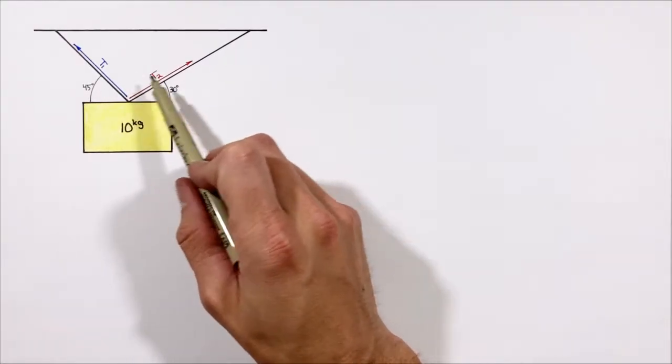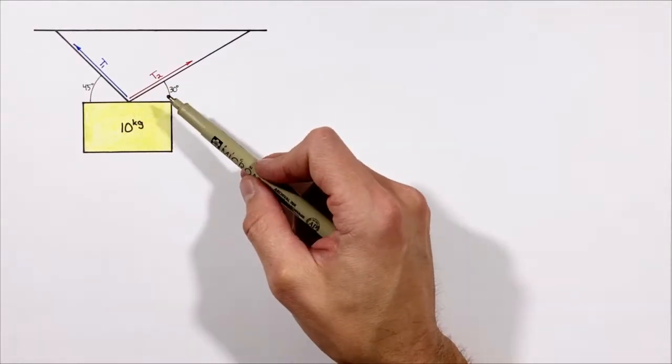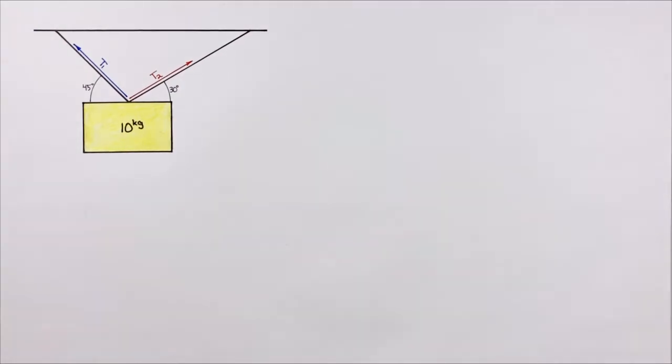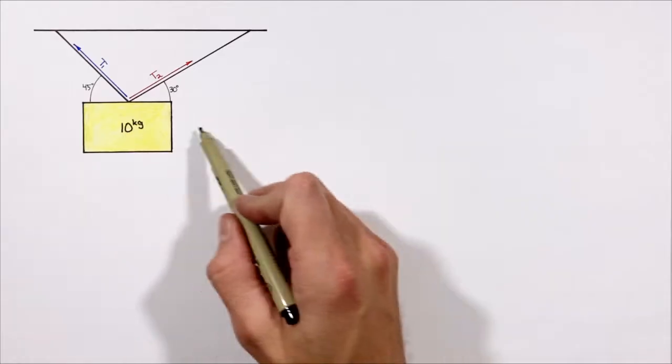To solve for the two tensions in these two cables, all we need to do is apply Newton's second law to this situation in both the x and y axes. We know this block is not going to accelerate horizontally.